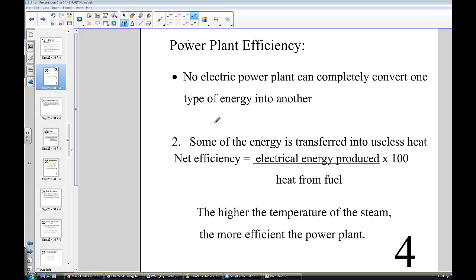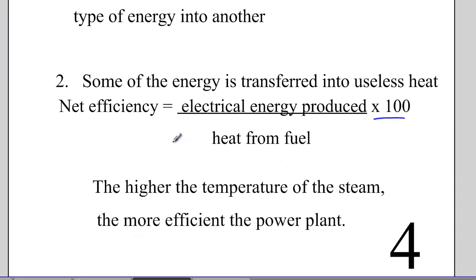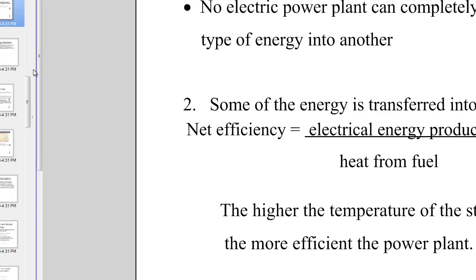The power plant efficiency formula — we know that no electric plant can be 100% efficient, so we consider what type of electrical net energy we're producing from the amount of coal placed into the power plant. Our formula is electrical energy produced divided by the available heat from the fuel, expressed as a percentage. The higher the temperature of the steam, the more efficient the plant. Modern plants run as well as 90% efficient; older models are 35 to 40% efficient.